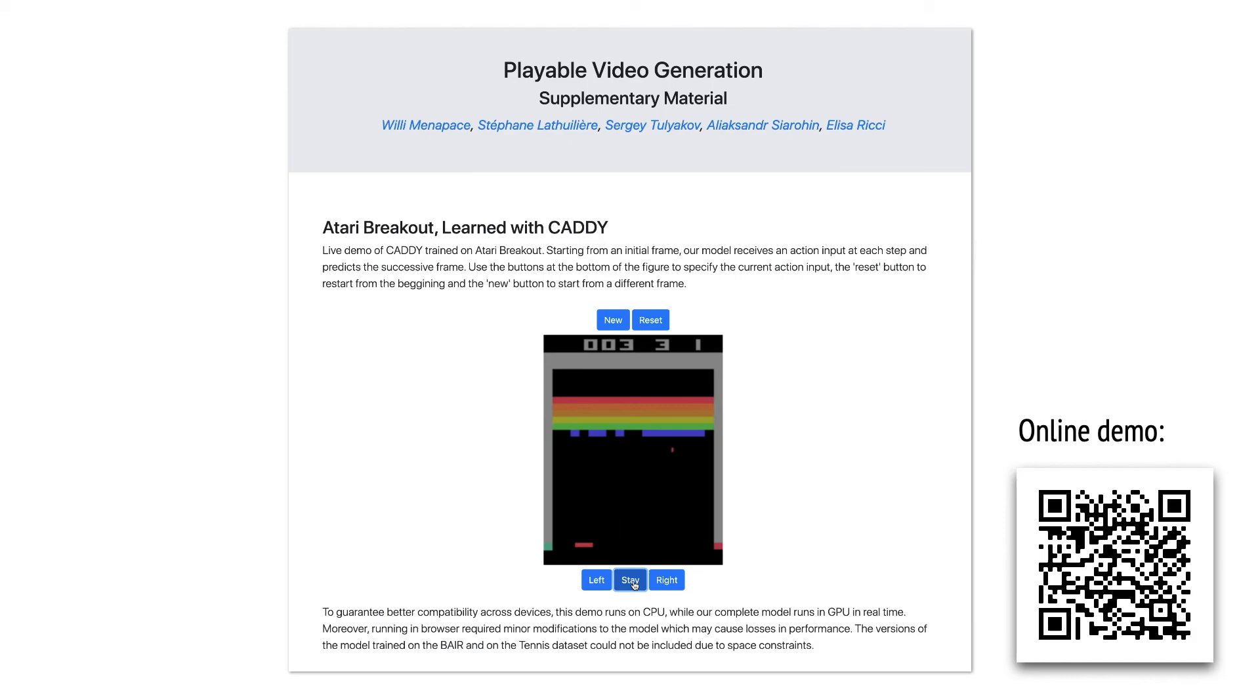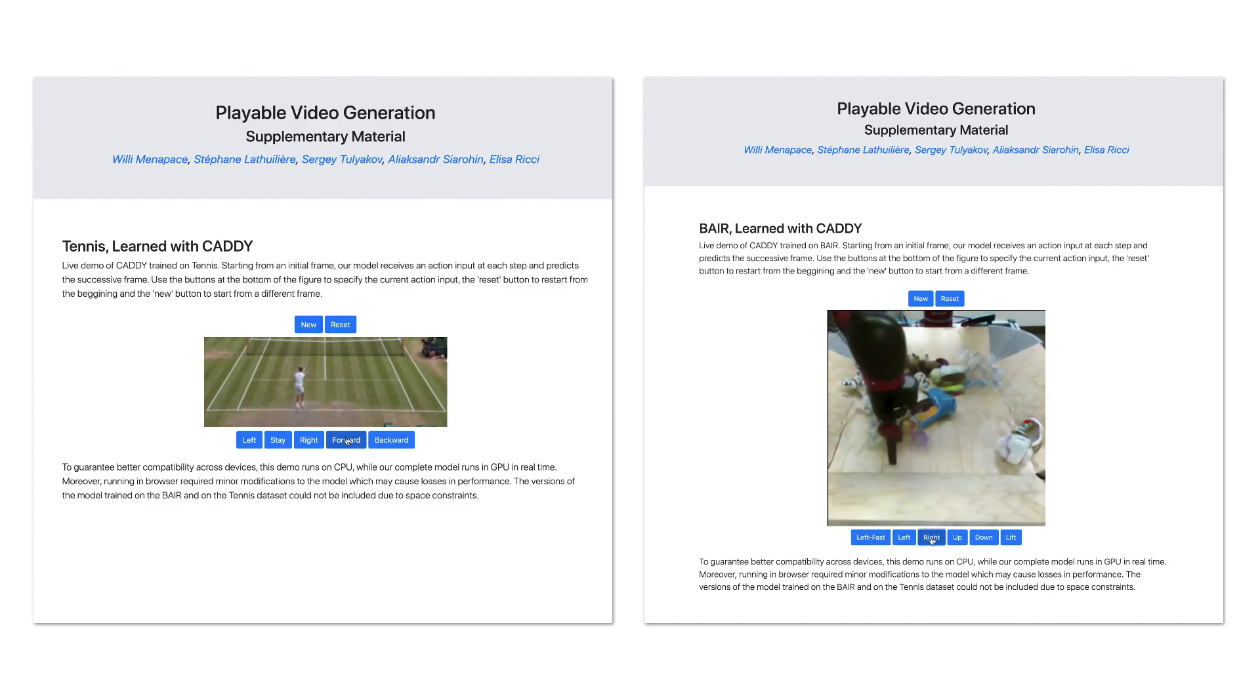We can similarly play tennis and move the robot arm. We can clearly see, when the user presses the buttons, the agent performs the corresponding action.